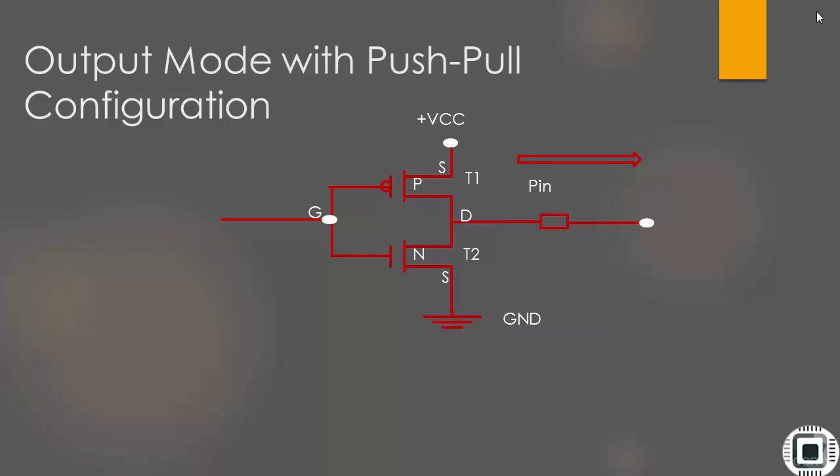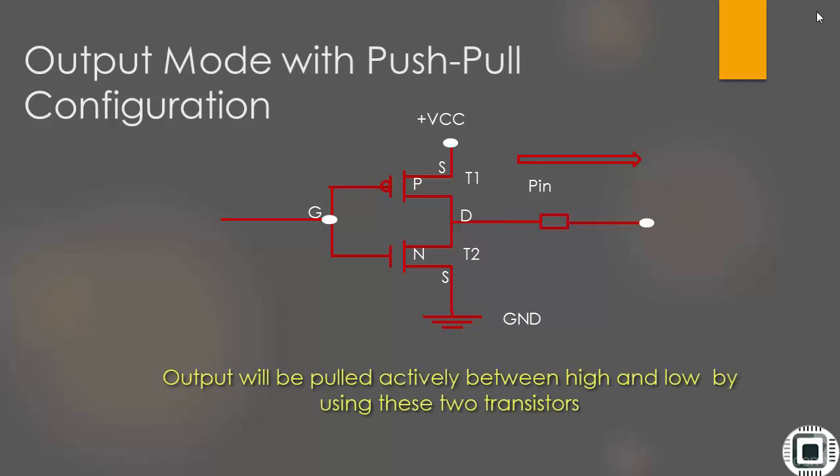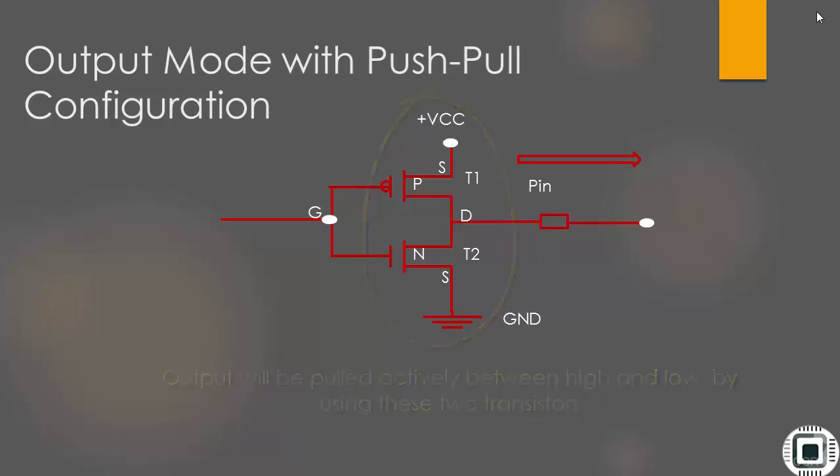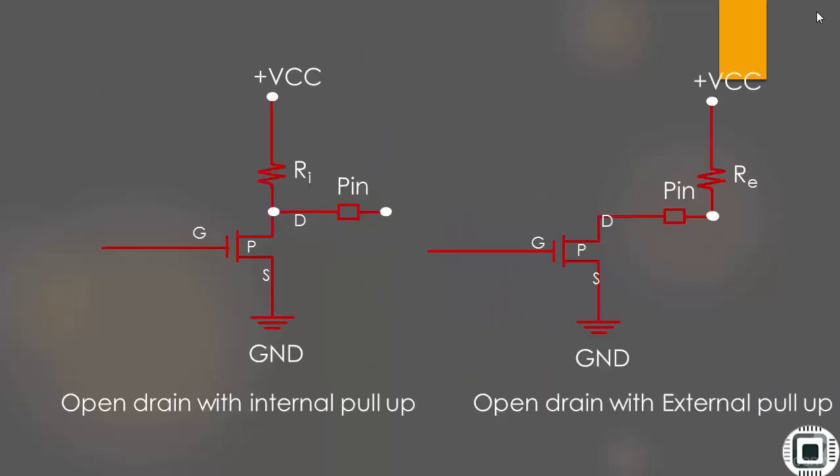This output configuration is called push-pull because the output will be pulled actively between high and low by using these two transistors, unlike other configurations such as open drain configuration where the output can be pulled only to low, as you saw in the earlier video.